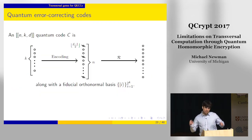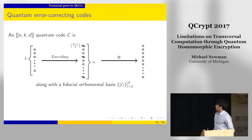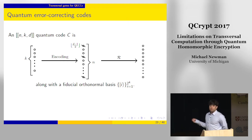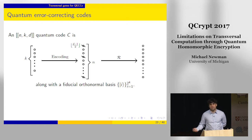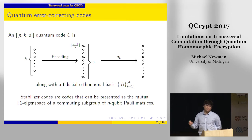Now let's switch gears and talk about transversal gates. Starting with error-correcting codes: an [n,k,d] code is an encoding of k logical bits into n physical bits such that if at most ⌊(d-1)/2⌋ of those bits get corrupted, there exists some recovery channel by which you can perfectly recover your information. It comes equipped with some fixed orthonormal basis. Stabilizer codes are the most frequently considered codes in the literature—a special class with a nice presentation in terms of the Pauli group.